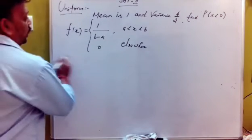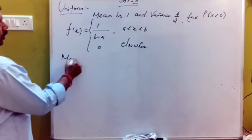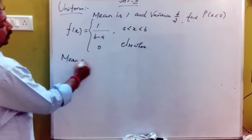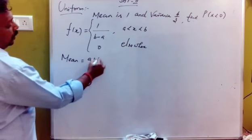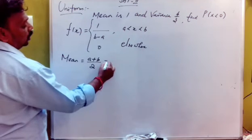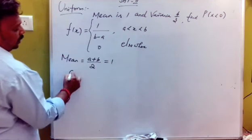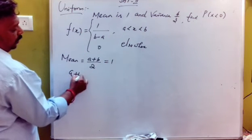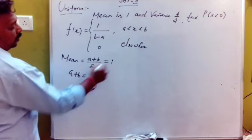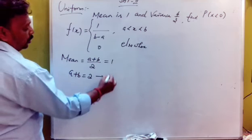The general mean formula is (a + b) / 2. So, a + b equals 2 into 1, giving a + b = 2.